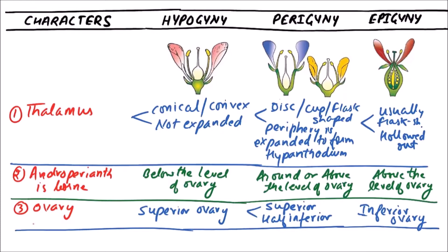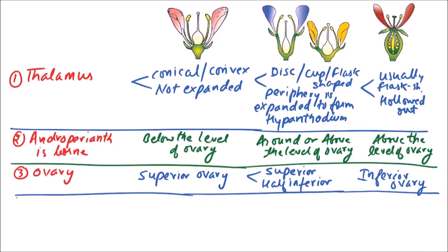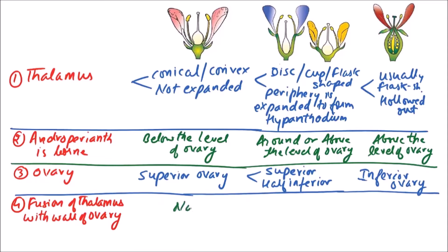The next difference is fusion of the thalamus with the wall of the ovary. There is no fusion in hypogyny and perigyny, but in the epigynous condition the thalamus is fused with the wall of the ovary.